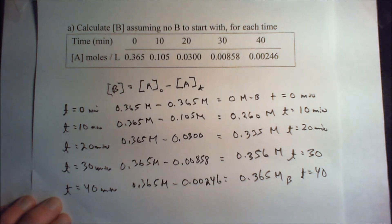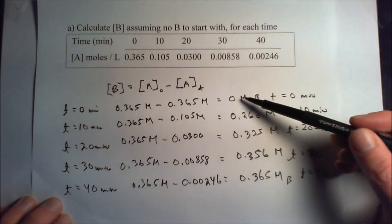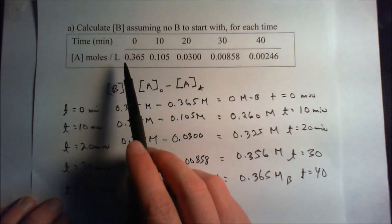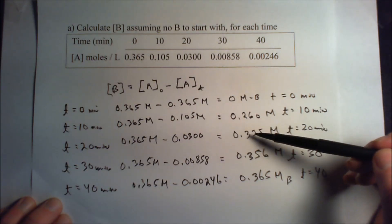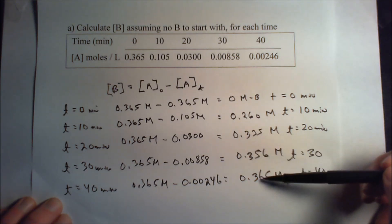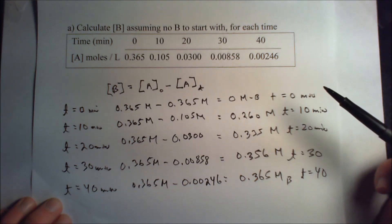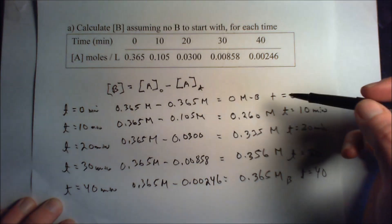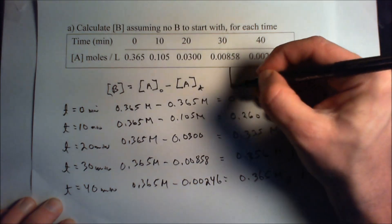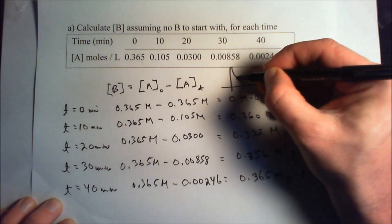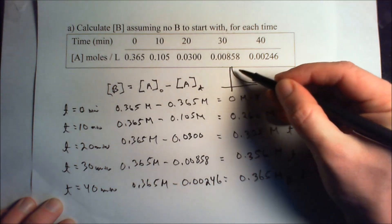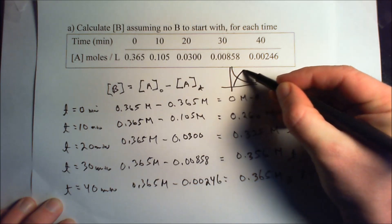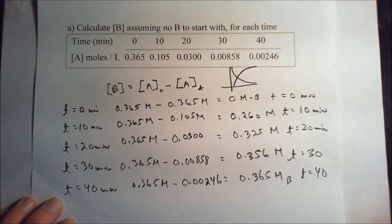What you should notice is that the appearance of B is pretty quick to begin with — just like the disappearance of A is quick to begin with. We go from 0 to 0.26 to 0.33, and then the appearance slows down. The reaction proceeds along a curve that looks exponential for A, and we should expect just the opposite for B — B should suddenly rise and then level off, and that's what we see in the data.